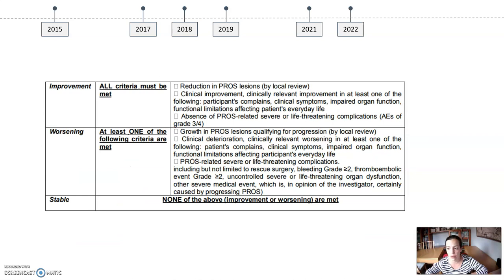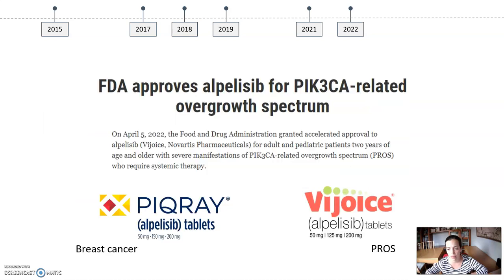Improvement is considered when there is a reduction of PROS lesions, clinical improvement in signs and symptoms, and an absence of severe adverse events. In April 2022, the Food and Drug Administration from the United States approved alpelisib for its use in PROS patients, thanks to the results from the retrospective study and the preliminary results from the clinical trial. We are still waiting for its approval in Europe.